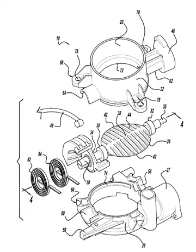In an internal combustion engine, the throttle is a means of controlling an engine's power by regulating the amount of fuel or air entering the engine. In a motor vehicle, the control used by the driver to regulate power is sometimes called the throttle, accelerator, or gas pedal. For a gasoline engine, the throttle most commonly regulates the amount of air and fuel allowed to enter the engine.